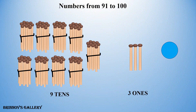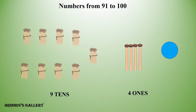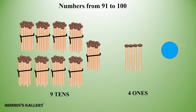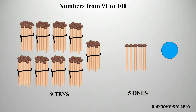9 tens, 3 ones — 93. 9 tens, 4 ones — 94. 9 tens, 5 ones — 95.